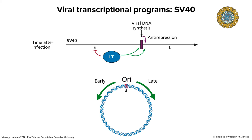The first example is SV40, a polyomavirus — a double-stranded circular DNA genome. This virus is unusual in that the genome in the virus particle is nucleosomed and chromatinized, which is not the case for most viral DNAs. In terms of the timeline of infection, SV40 has just two phases: early and late. There are early mRNAs made and late mRNAs made. At 12 o'clock on the circular genome, early mRNAs are transcribed to the left and late mRNAs to the right, from two different promoters.